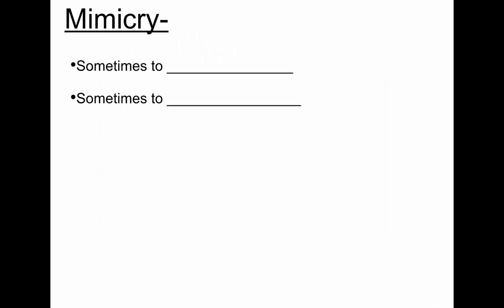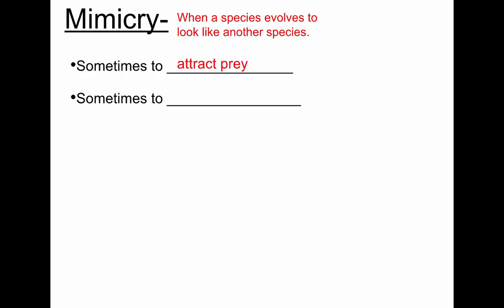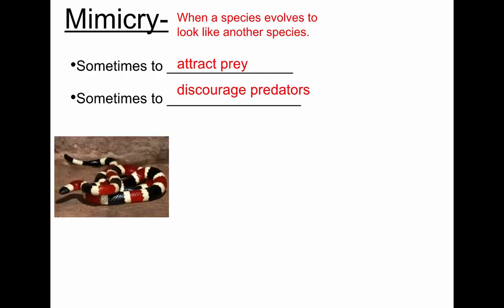Some organisms have even evolved to look like another organism — it's called mimicry. Mimicry is when a species evolves to look like some other species. Sometimes it's to help attract prey; other times it's to discourage predators.